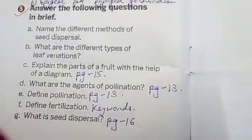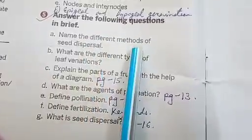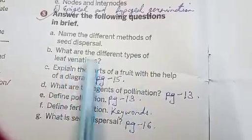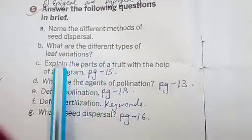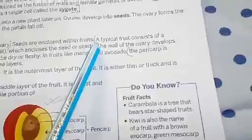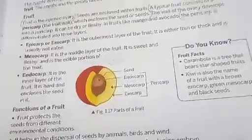For brief answer questions: name the different methods of seed dispersal — write dispersal by wind, dispersal by water, and the other methods (four methods total). Different types of leaf venation — define both types. Explain the parts of a fruit with a diagram — see page 15; draw it with the labeled diagram and also write the functions of the fruit.